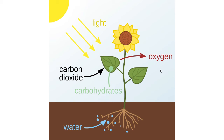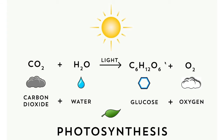That is why we always say to plant more and more trees, because after photosynthesis the leftover oxygen is useful for the animal kingdom. Here is the equation of photosynthesis: carbon dioxide plus water, in the presence of light and chlorophyll, produces glucose (food) and oxygen for the atmosphere.